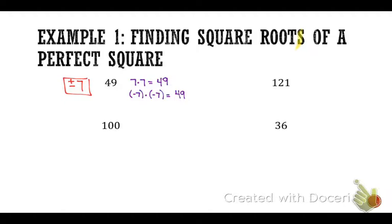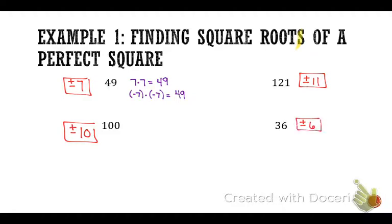What about 100? Positive, negative 10. What about 121? Positive, negative 11. Good job. And what about 36? Positive, negative 6. Awesome. Anybody hoping that's on the quiz? Okay, good — we're off to a good start.